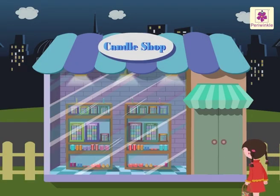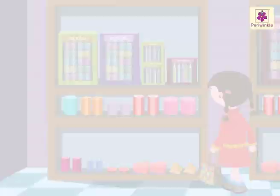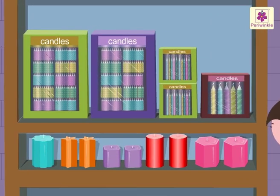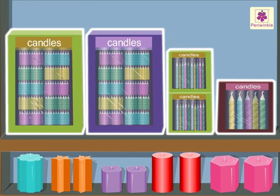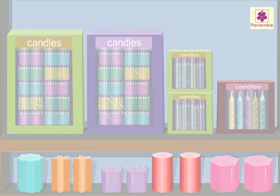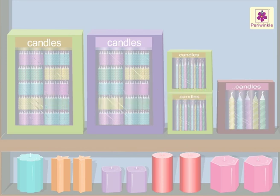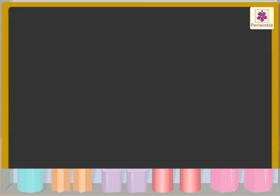Now, let us join Nancy. She is buying some candles. She bought 225 of them. Do you remember? We can write a number in different ways.